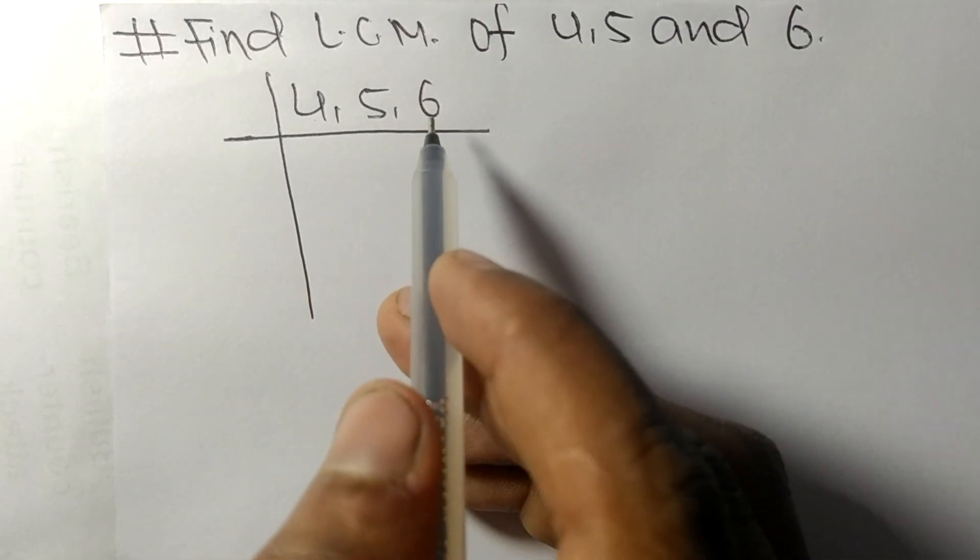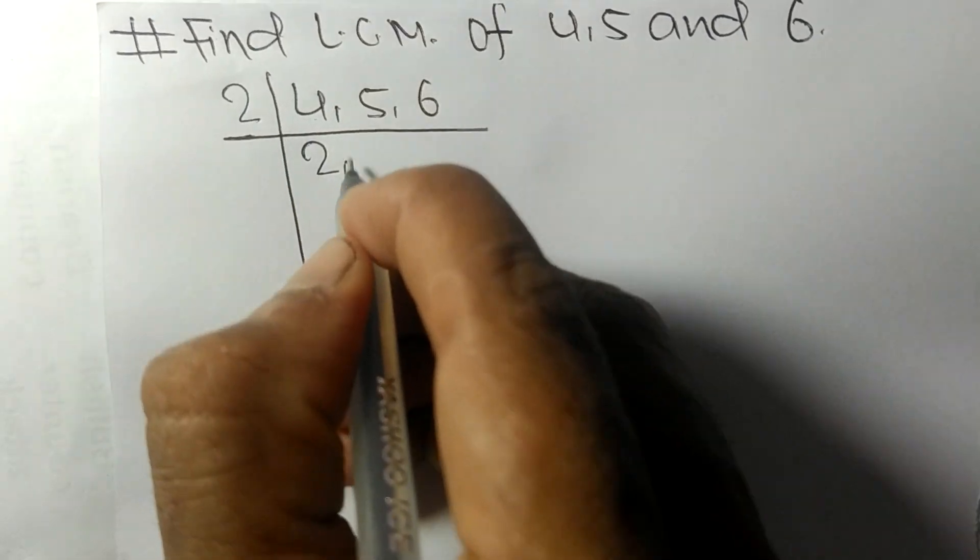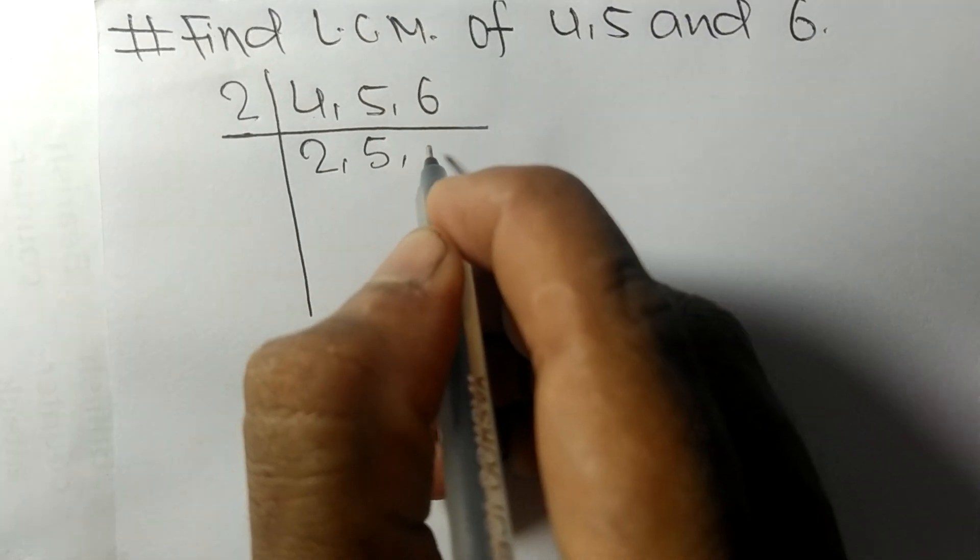6 are exactly divisible by 2. 2 times 2 means 4. 5 is not divisible, so as it is. 2 times...